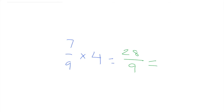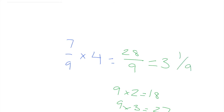So how many times can nine go into twenty-eight? We know nine times two equals eighteen, and nine times three equals twenty-seven. Nine times three would be better — twenty-seven — with a remainder of one ninth. This is called a mixed fraction.